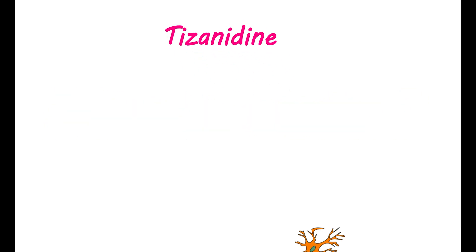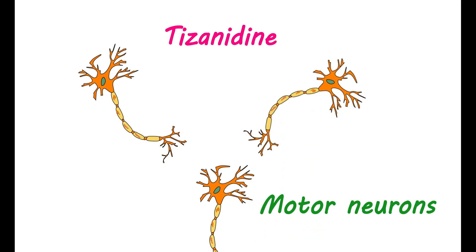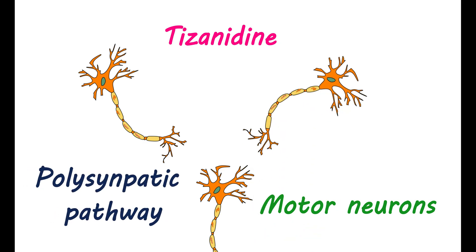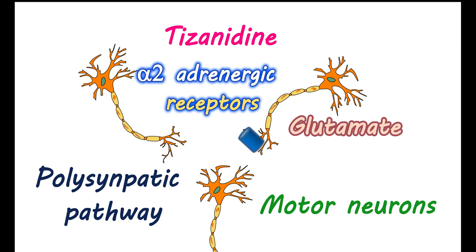Tizanidine affects certain neurons that supply your skeletal muscle, called motor neurons. These motor neurons are connected with many other neurons, forming a junction called a polysynaptic pathway. At this junction, the release of neurotransmitters like glutamate is important — it is an excitatory chemical mediator that stimulates motor neurons, increasing muscle contraction. However, glutamate release is controlled by presynaptic alpha-2 adrenergic receptors, which are autoinhibitory in nature. Tizanidine binds to and activates these receptors, resulting in increased inhibition of glutamate release, decreased activation of skeletal muscle, and reduced muscle tone.